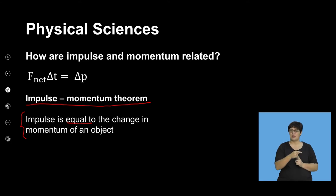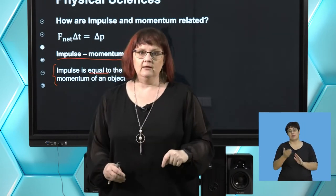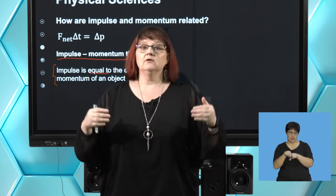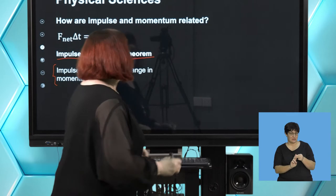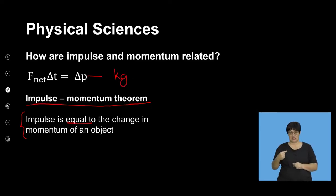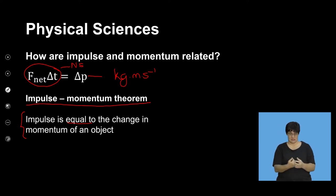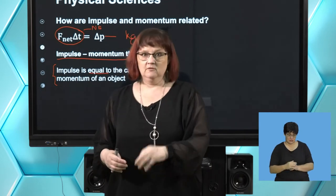This gives us F net × ΔT = ΔP. This is the impulse-momentum theorem — a new term. This says impulse is equal to the change in momentum of an object. Sometimes in your questions they'll say 'use the impulse-momentum theorem,' which means you use F net × ΔT = ΔP. Be careful with units: change in momentum uses kilogram meters per second, while impulse's units are Newton seconds. They have the same number value but different units. If I ask for impulse, I want Newton seconds; if I ask for change in momentum, I want kilogram meters per second.